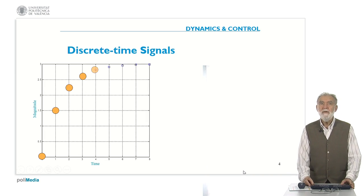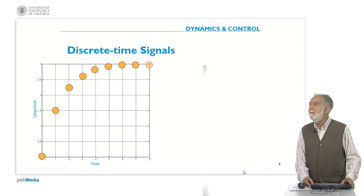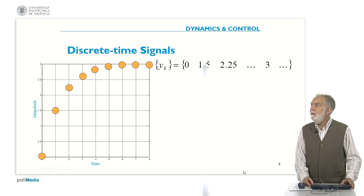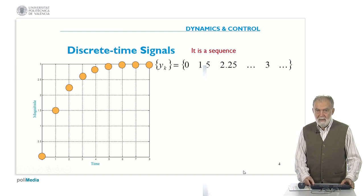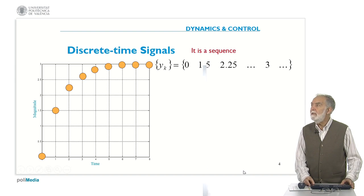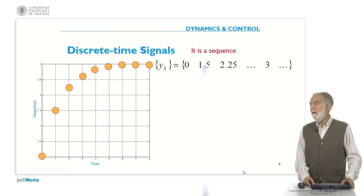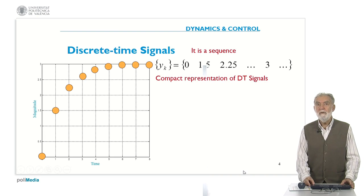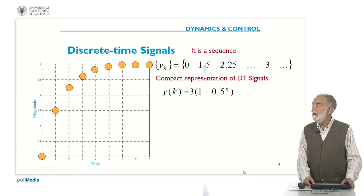In the case of discrete time signals, you can see that this signal can be represented by a sequence — a sequence of numbers: the value of the signal at time 0, 1, 2, 3, and so on. And you can also represent that in a compact form, like a function y of k for k equal 0, 1, 2, 3, and so on, which can be expressed by this formula.